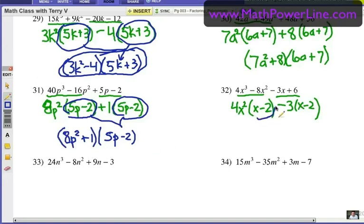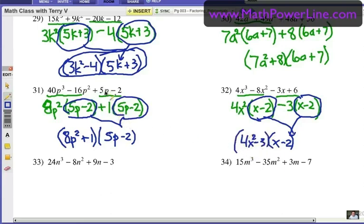Over here, the x minus 2 binomial is the common factor there. And then I write it down once, as part of my final answer. x minus 2. And I have 4x squared minus 3. Just a quick note here. Notice that 5p minus 2 doesn't change. But in order to make it work with my factoring pattern in groups, I factor out a 1. That's why it's 8p squared plus 1. Don't forget about that. Try 33 and 34. And thanks for watching this video.